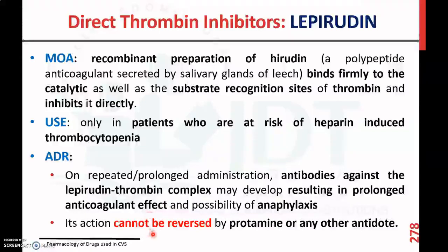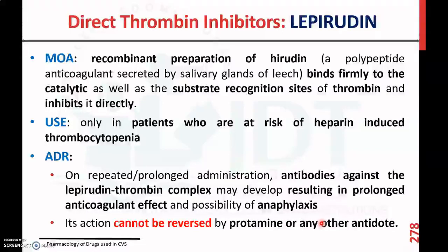An important limitation is that lepirudin cannot be reversed. Unlike heparin, where we have protamine sulfate as an antidote for overdose, in the case of lepirudin it cannot be reversed by protamine or any other antidote. This is another important adverse consideration of the direct thrombin inhibitor lepirudin.